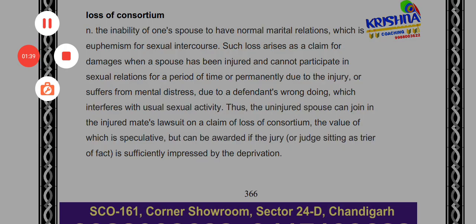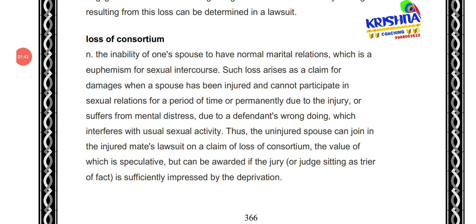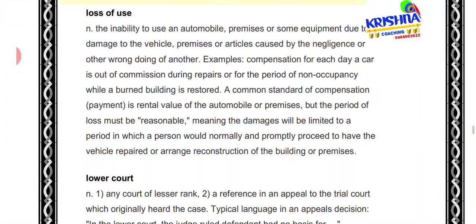Next is 'loss of consortium.' It means when a person is so seriously injured that the spouse cannot have normal marital relations. The loss arising there — the uninjured spouse suffers damages if the injured spouse cannot participate in sexual relations for a particular time period or suffers mental distress. The uninjured spouse can join in the injured mate's lawsuit and claim damages.